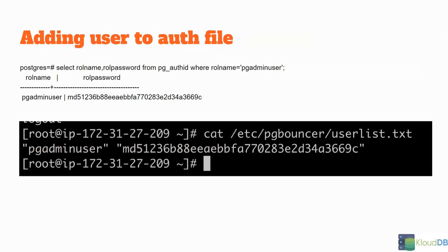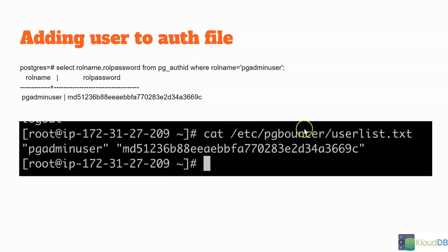Once those configuration changes are made, the next important thing is adding users to the authentication file. As discussed, we're using MD5 and the username is pgadmin user, and here is the MD5 hash for that user. You get the MD5 hash from this command right here. Once you create a user for PG Bouncer, or if you want to use an existing user, run the select command, get the hash, and then put it in the authentication file. Once you populate the authentication file, that user can be used to connect via PG Bouncer.